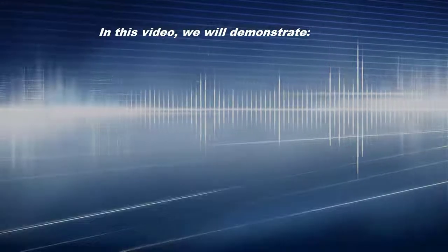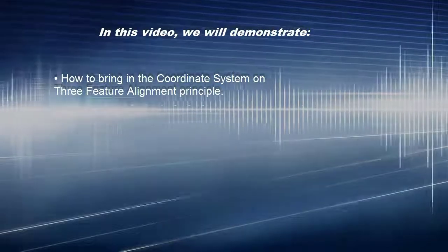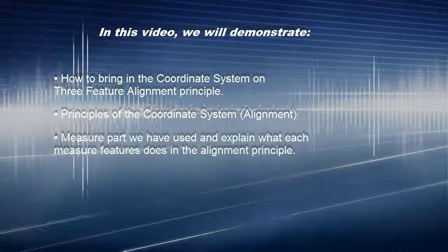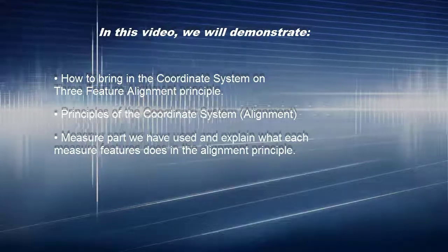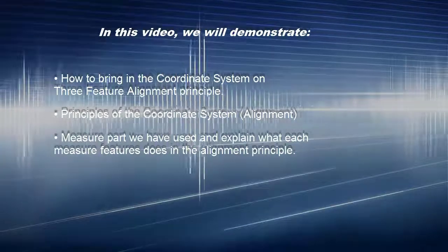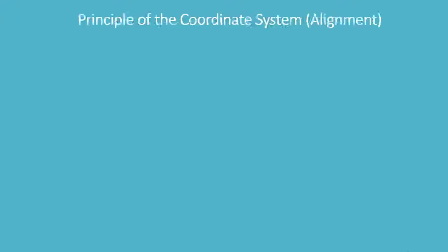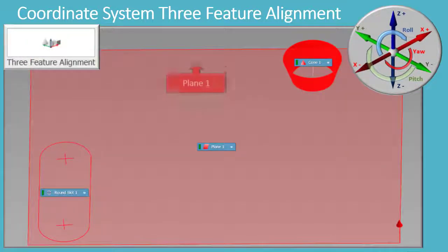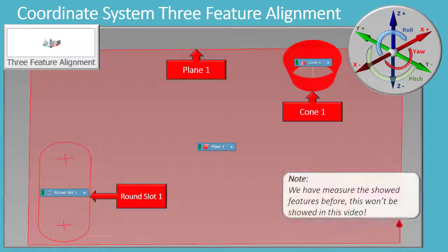In this video, we will demonstrate how to bring in the coordinate system using the three feature alignment principle. We will measure the part and explain what each measured feature does in the alignment principle. When you bring in a coordinate system, you must take out the six degrees of freedom of your measured part. Six degrees of freedom are: up, down, left, right, forward, back, pitch, roll, and yaw.